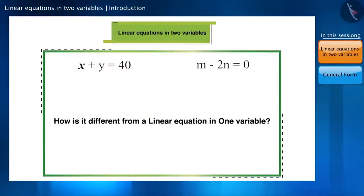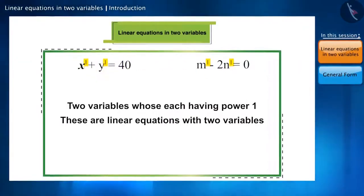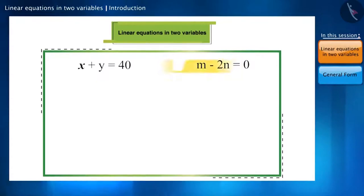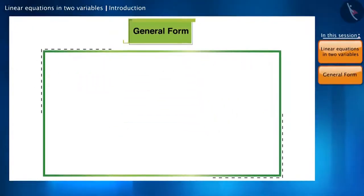Can you tell how these two equations are different from a linear equation in one variable? Come on, let's see. In these two equations, the variables are x, y and m, n. The maximum power of both is 1. Hence, both of them are linear equations in two variables. We can write the equation x plus y is equal to 40 and x plus y minus 40 is equal to 0 as well. And from this, we reach this general form.